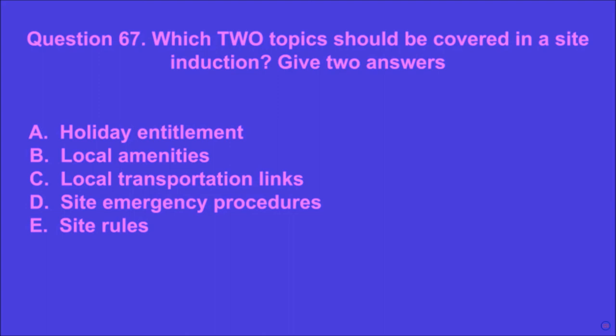Question 67: Which two topics should be covered in a site induction? Give two answers. A: holiday entitlement, B: local amenities, C: local transportation links, D: site emergency procedures, E: site rules. D and E are the correct answers.